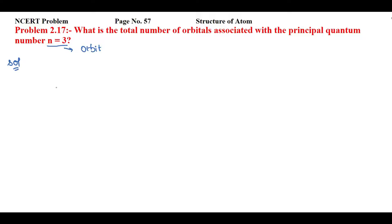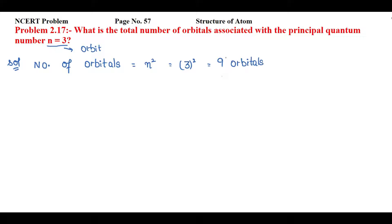First, we'll see a formula that you can use in your competitive exams and find the value directly. The number of orbitals equals n squared. The value of n is 3, so you take the square of 3, which is 9. That means with n equal to 3, you have 9 orbitals. Now we will do this question in detail.